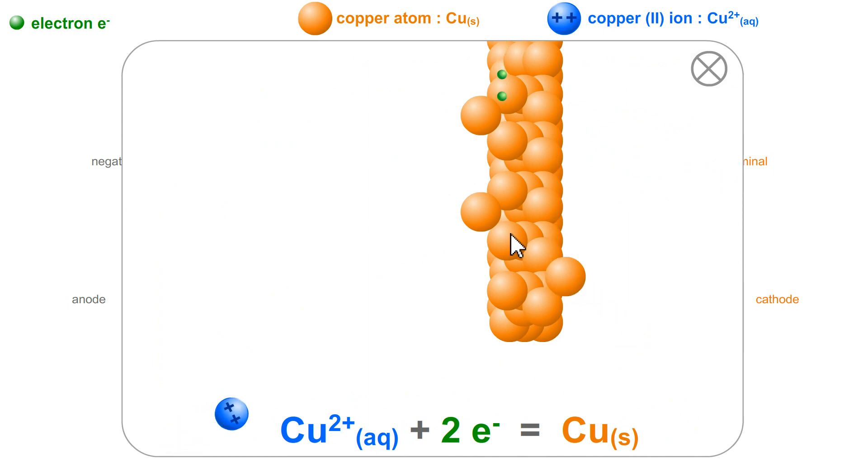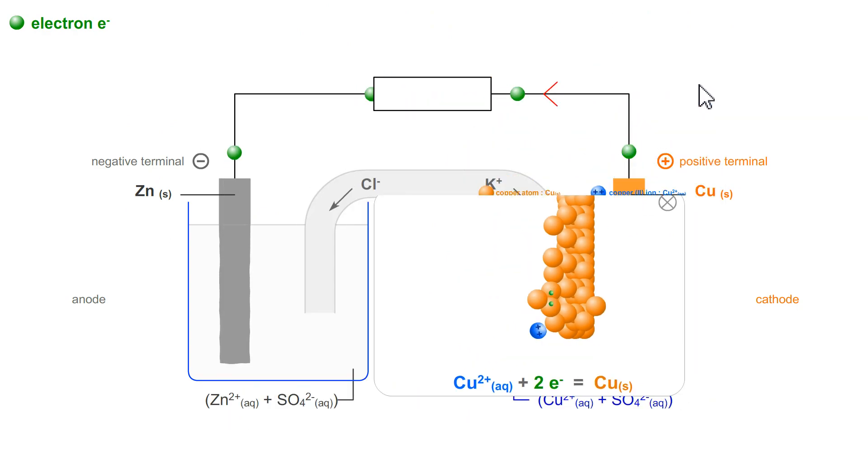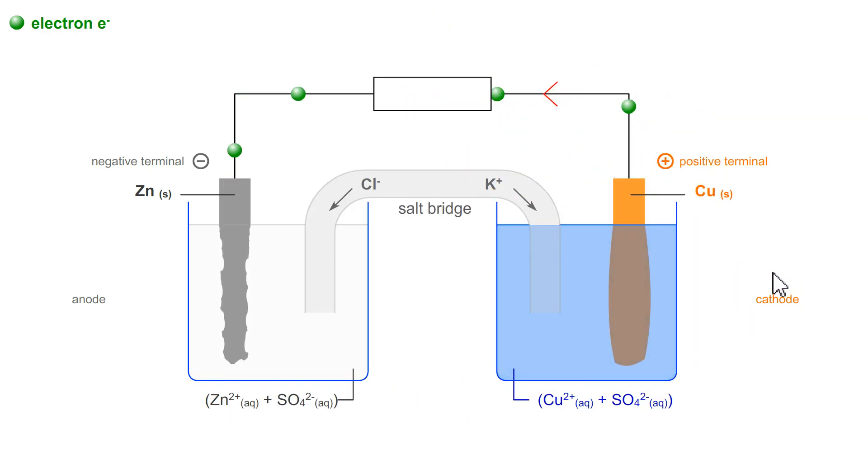The oxidizing agent cannot be oxidized. The oxidizing agent is reduced. It captures the electrons, and since it's a reduction, we'll call it the cathode.